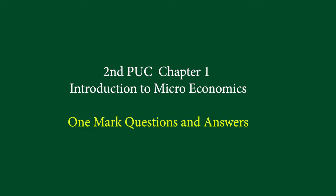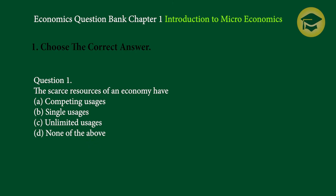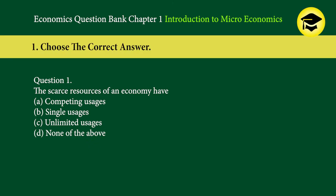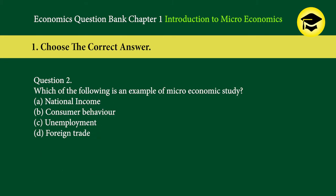Second PUC Economics, Chapter 1: Introduction to Microeconomics — One Mark Questions and Answers. Question 1: The scarce resources of an economy have — A. competing usages, B. single usages, C. unlimited usages, D. none of the above. Answer: A. Competing usages. Question 2: Which of the following is an example of microeconomic study? A. National income, B. Consumer behavior, C. Unemployment, D. Foreign trade. Answer: B. Consumer behavior.